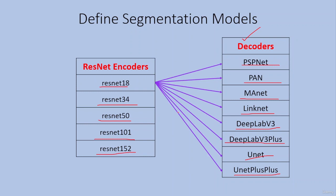All ResNet encoders can be used with all decoders. For example, ResNet 18 can be used with all decoders, and similarly ResNet 101 can also be used with all decoders. For experiments and evaluation, we will use one of the ResNet encoders with different decoders, because ResNet is extensively used in research for segmentation due to its powerful capability for feature learning.